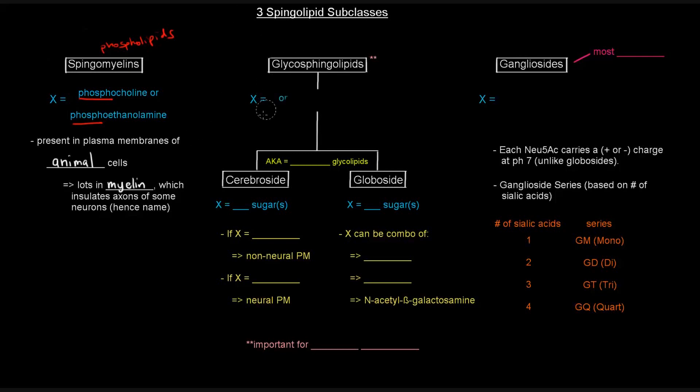Now, glycosphingolipids basically is when the X is one or more sugars. So if you have one sugar or more sugars, you have a glycosphingolipid. But now, these glycosphingolipids are also called neutral. They're called neutral glycolipids. And we'll get to why in just a second. In fact, I'll even mention it now.